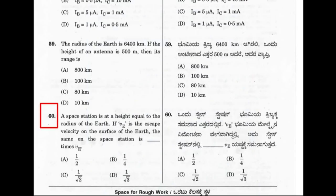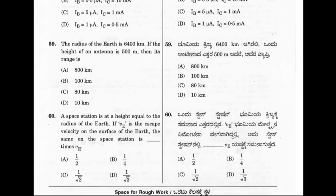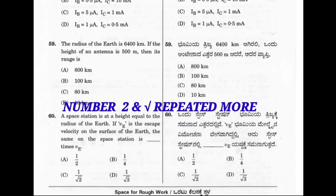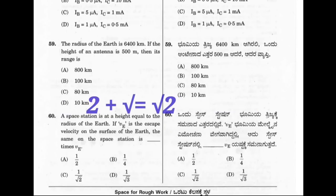In this question, the probability of the correct option being option A or option C — both are having a similar format, with the only difference being that option C has 1 by root 2. To solve this tricky question, we take the help of other options. The number 2 is repeated more, along with the term root. Joining both these terms, the probability of 1 by root 2 will be more. Therefore this condition supports option C, and the correct option for this question will be option C.